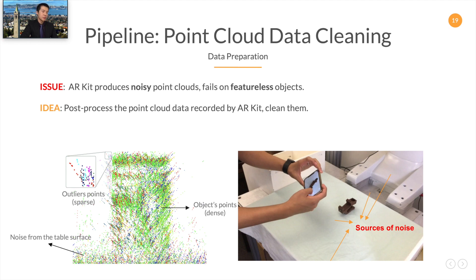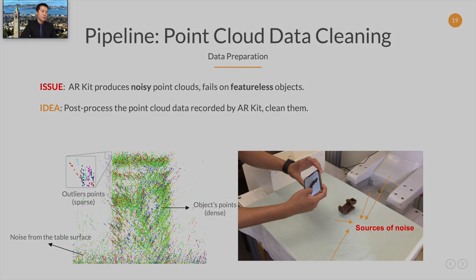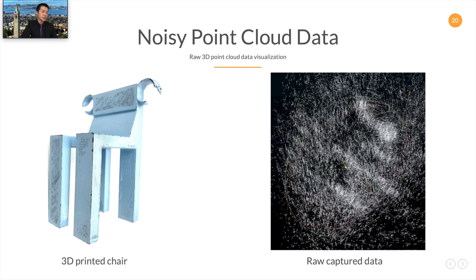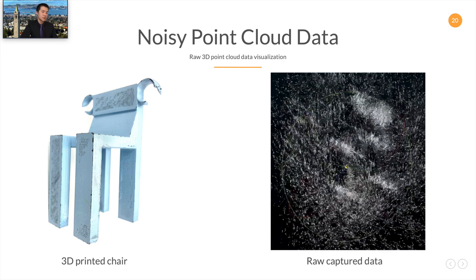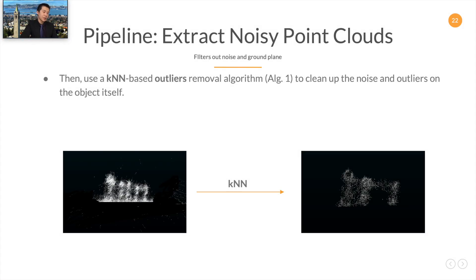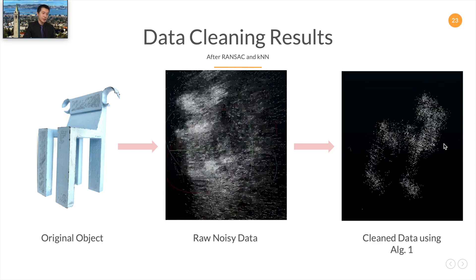Therefore, we wish to post-process the data by cleaning it. Here we show an example of the noisy point cloud data that ARKit collects. To clean the point cloud data, we first filter out the noise from the table plane by fitting a plane equation using RANSAC. Then we use the KNN algorithm to remove outliers in order to get rid of noise from the object itself. KNN works here because the outlier points are much sparser than the object's points. Here we show an example of the data cleaning process.